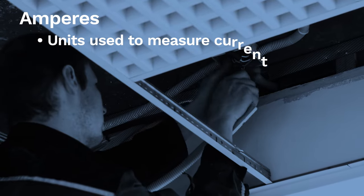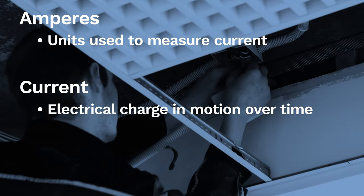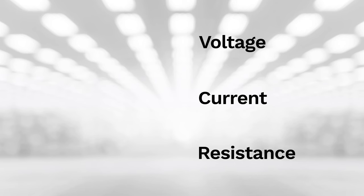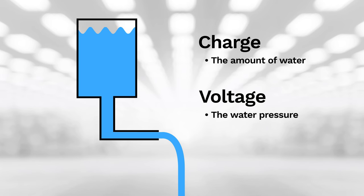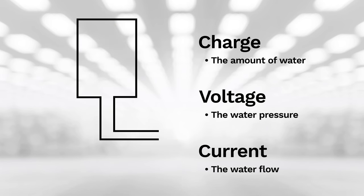Amperes are the units used to measure current or an electrical charge in motion. When describing voltage, current, and resistance, a common analogy is a water tank. In this analogy, charge is represented by the water amount, voltage is represented by the water pressure, and current is represented by the water flow.